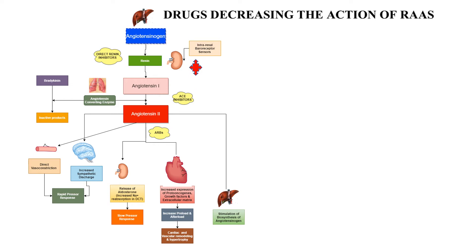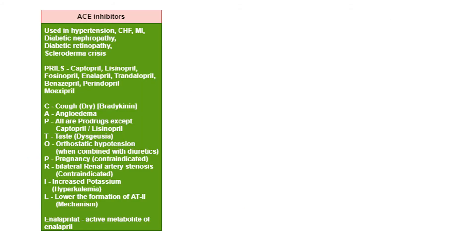Drugs addressing the RAS system are direct renin inhibitors, ACE inhibitors, and angiotensin receptor blockers. ACE inhibitors are used in hypertension, congestive heart failure, myocardial infarction, diabetic nephropathy, diabetic neuropathy, and scleroderma crisis. The code to remember is 'pril': captopril, lisinopril, fosinopril, enalapril, trandolapril, benazepril, perindopril, and moexipril.